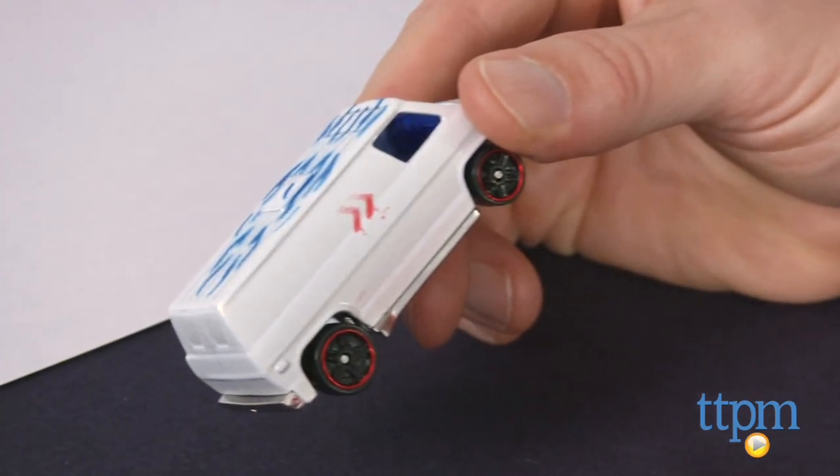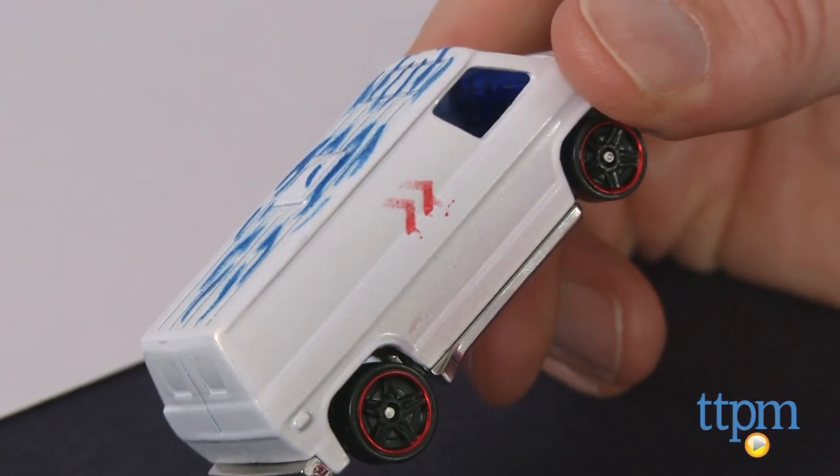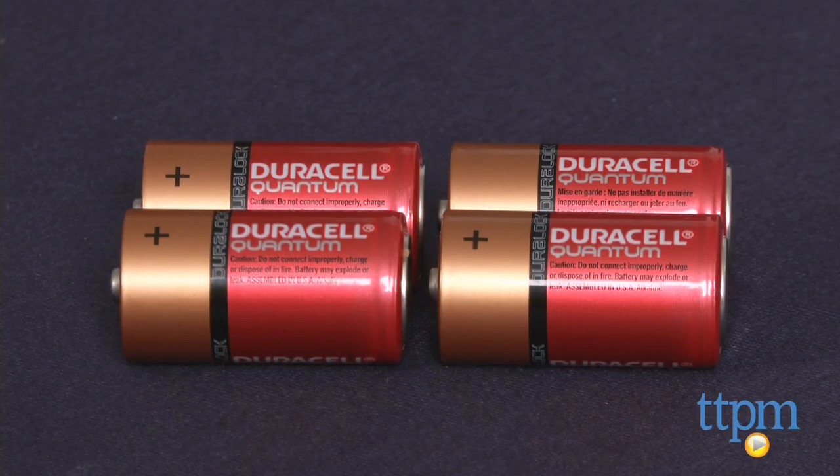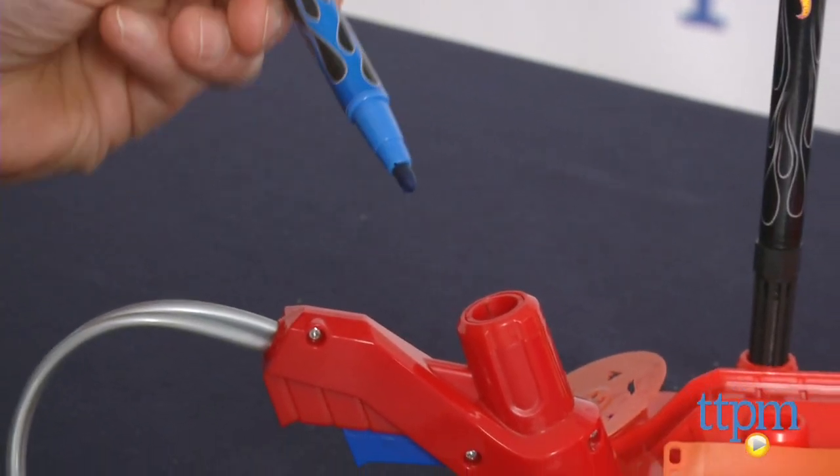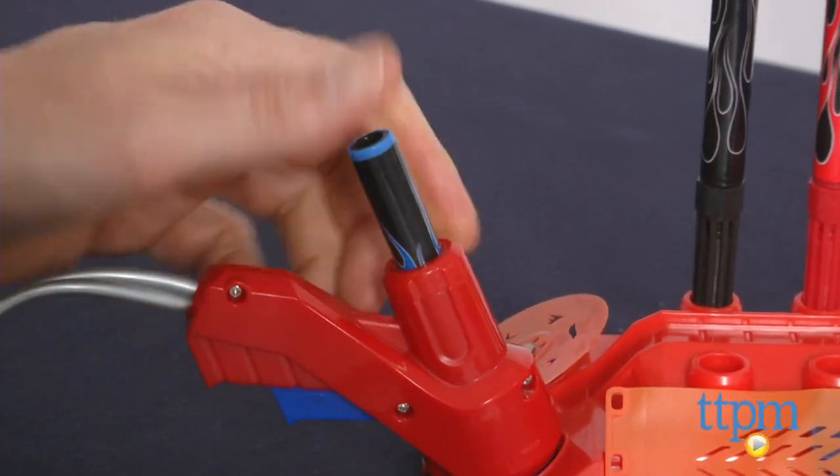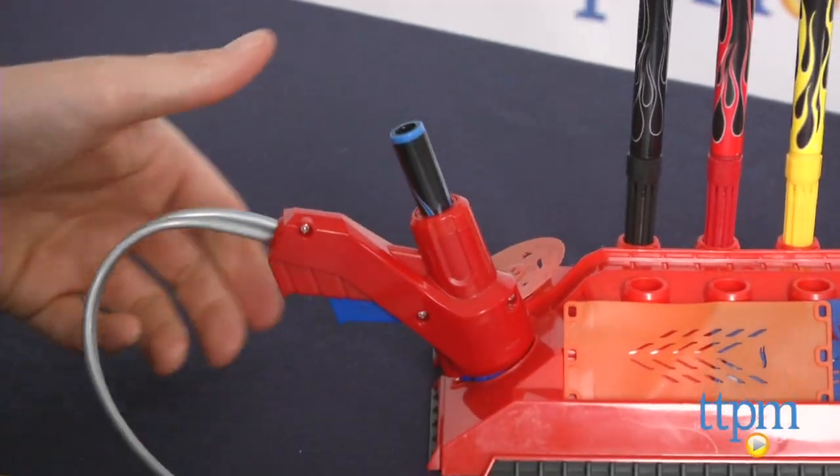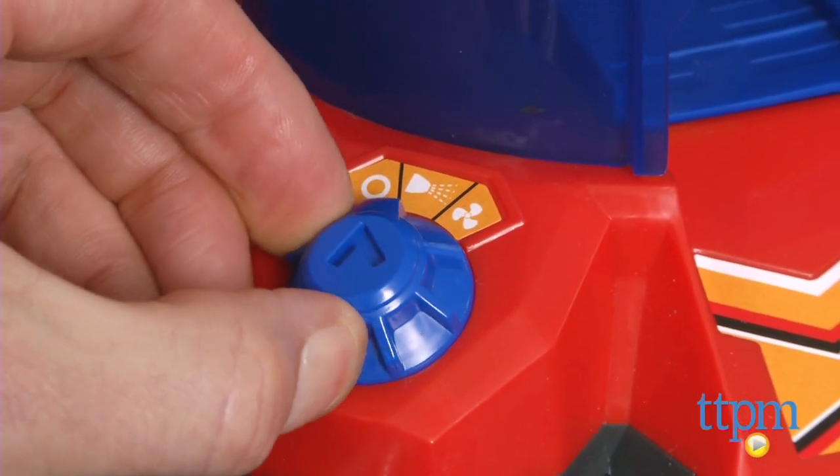The toy took us about 10 minutes to assemble, and it takes four C batteries. To play, select a colored pen and insert it into the airbrush handle. Be sure to push it all the way in until it clicks in place. Turn the knob to the paint setting.